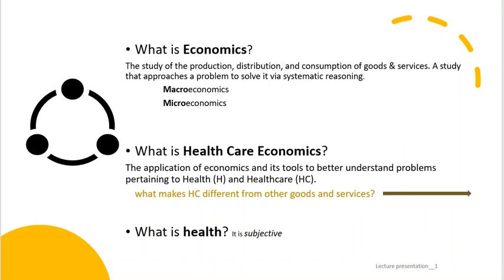Macro and microeconomics are examples. These areas of study are just as the prefix conveys. Macro is big — it is the study of larger segments of the economy, such as inflation and unemployment rates. Microeconomics is more small scale, referring to areas like personal and individual economic factors, for example a household or small business budget.